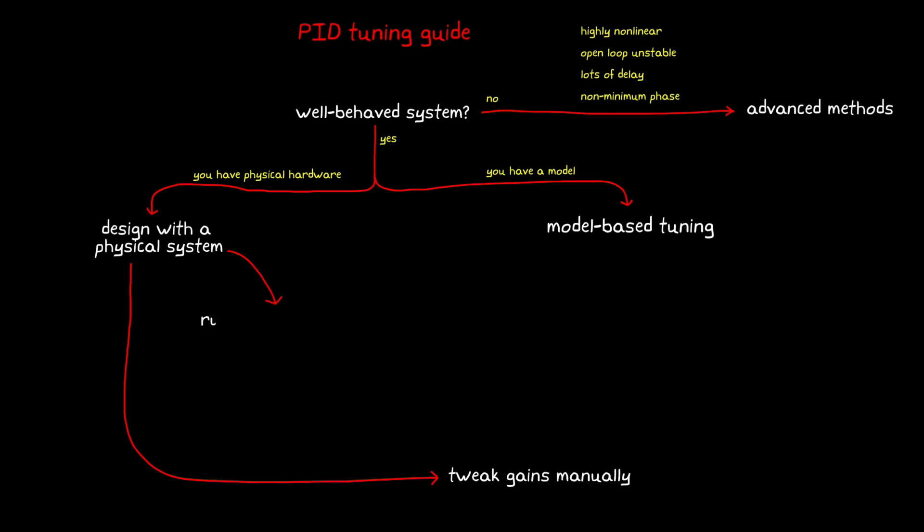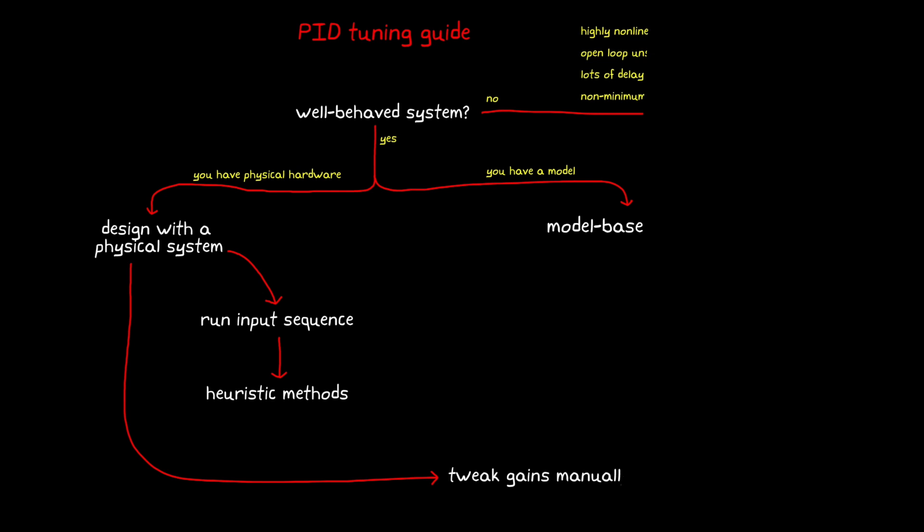Another more systematic approach would be to run some predefined input sequence on your hardware, and then observe the open-loop response. Often this is a step input, but it can be any arbitrary command. From the response, you can use a heuristic technique like the Ziegler-Nichols or Cohen-Kuhn method. These methods are nice because you don't need a model. You just need to measure certain aspects of the response, like the time constant or oscillation period, and then use that value to calculate an initial gain set.